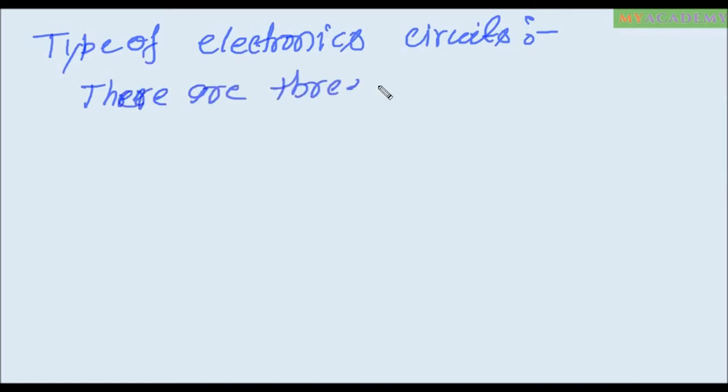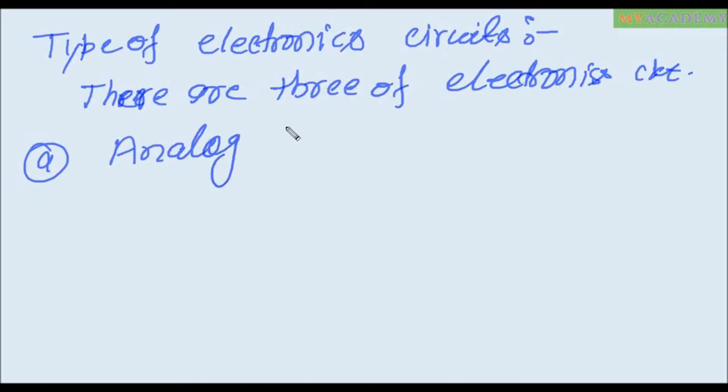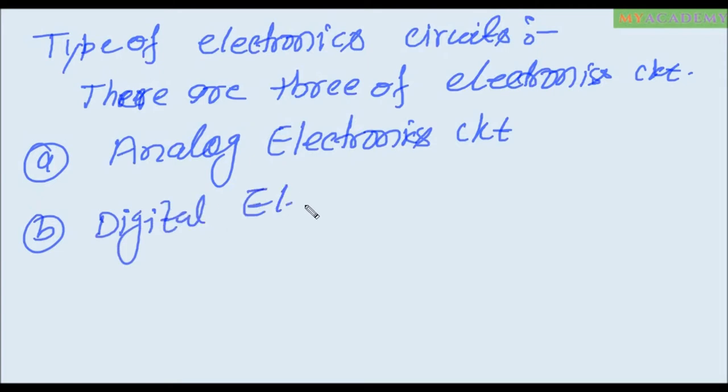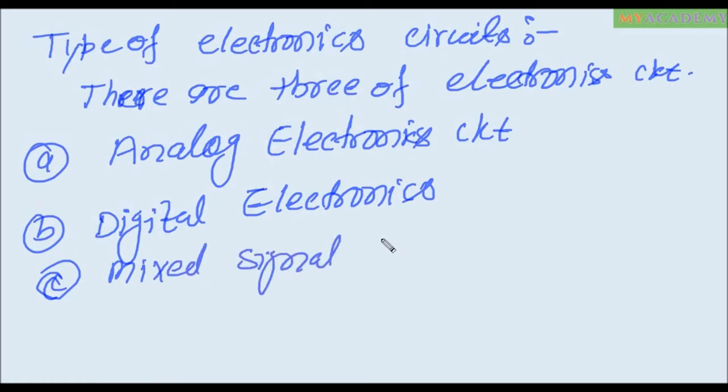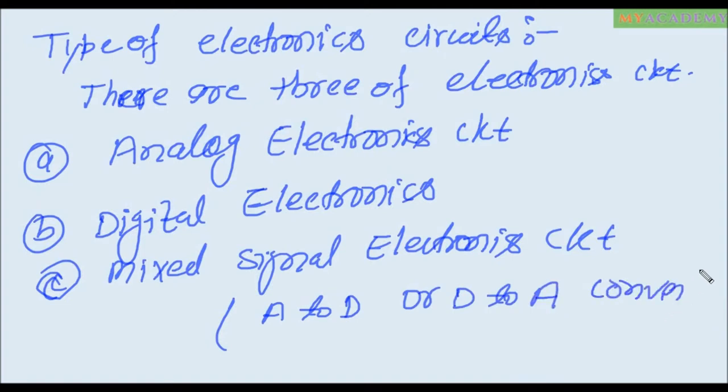There are three types of electronic circuit. First type analog electronic circuit, B is the digital electronic circuit, and C is the mixed signal electronic circuit. Mixed signal electronic circuit means analog to digital converter or digital to analog converter.